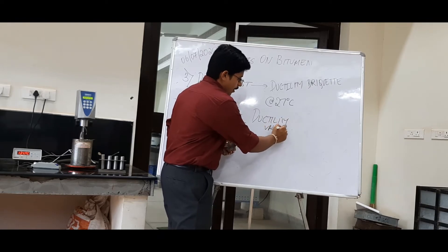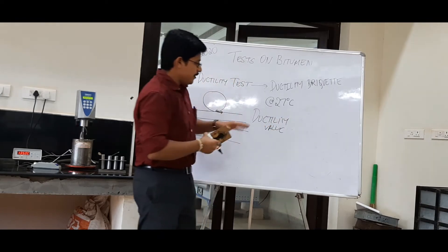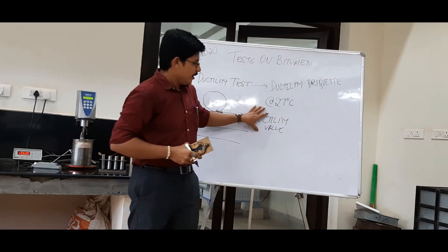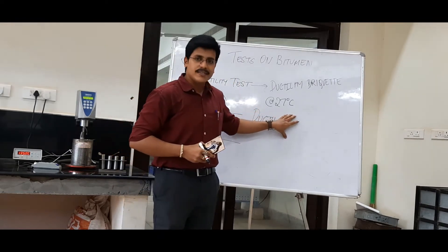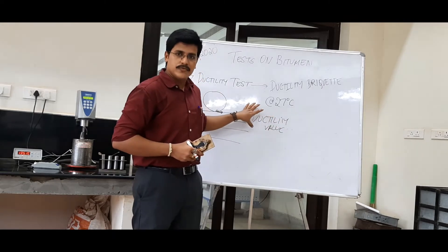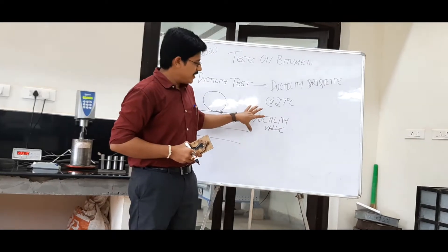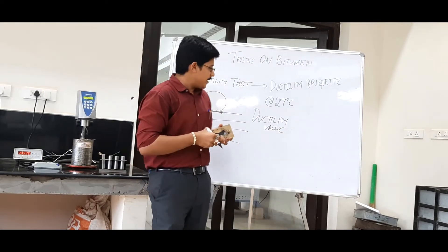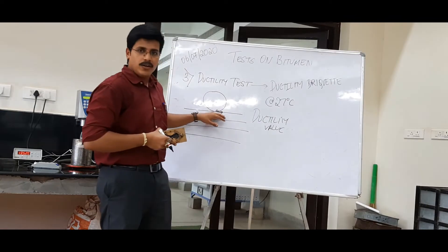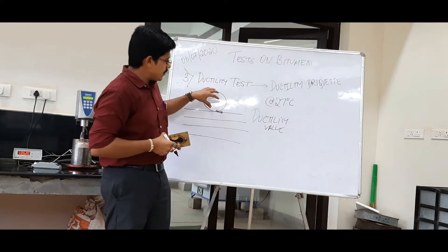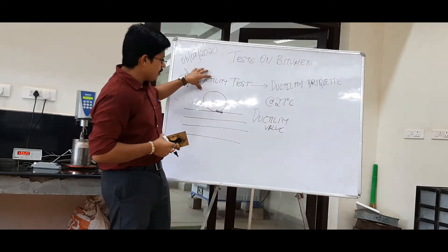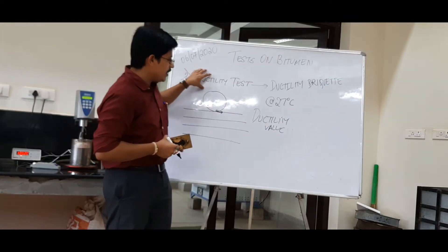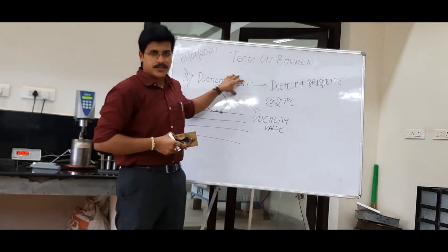If we have a higher level of ductility, then the bitumen can take more tensile loads. If it is very low, then it is very stiff and will break very easily without carrying any tensile loads. In this way, we classify the bitumen based on the ductility test.